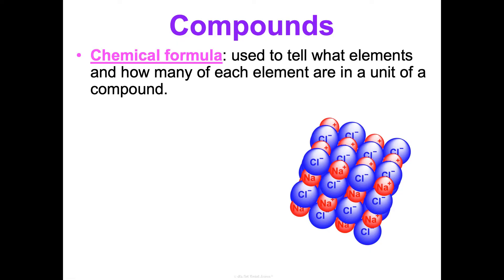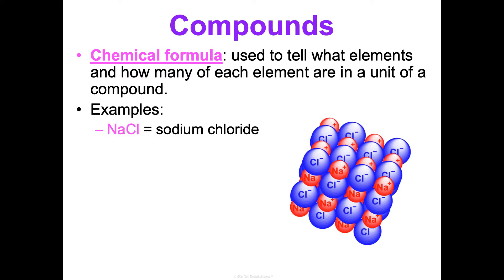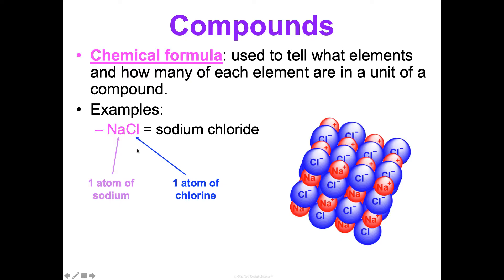Before we talk more about compounds, you need to know what a chemical formula is. A chemical formula tells you what elements and how many of each element are in a unit of a compound. For example, NaCl is sodium chloride. When we don't see any numbers in the subscripts, that tells us there's just one — so sodium chloride is one atom of sodium for every one atom of chlorine.